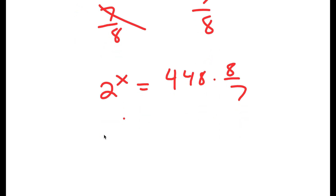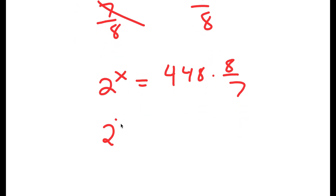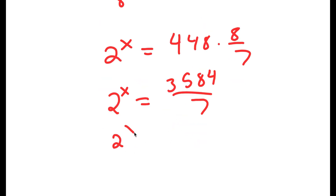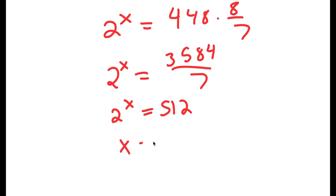Now 448 times 8 equals 3,584. Divided by 7, that equals 512. So 2 to the power of x equals 512, meaning x is equal to 9.